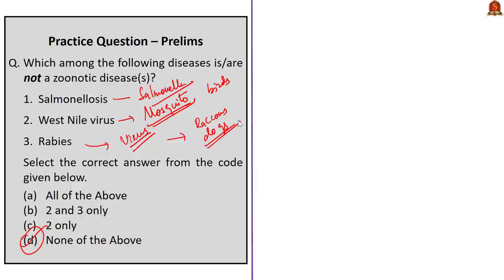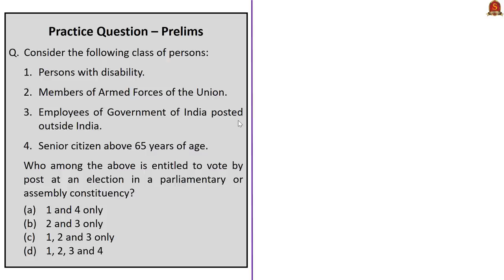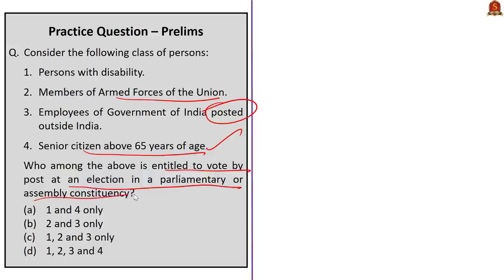Next question: Consider the following classes of persons — persons with disability, members of armed forces of the Union, employees of Government of India posted outside India, and senior citizens above 65 years of age. Who is entitled to vote by post? Options 1, 2, and 3 are correct. Option 4 is incorrect because the age threshold is above 80 years, not 65 years. So the correct answer is option C: one, two, and three only.